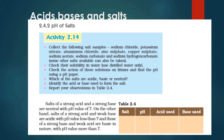So from pH paper we also come to know that 0 to 14 numbers are present on the scale. If the pH value is less than 7, it is an acid; if it is more than 7, it is a base; and if it is 7, it is neutral — for example, water. Strong acids lie near 1, and strong bases like sodium hydroxide lie at 14.